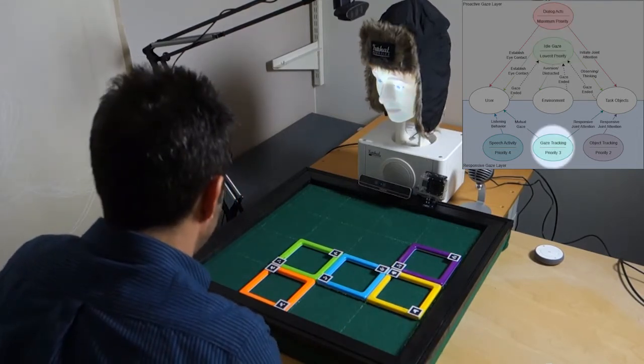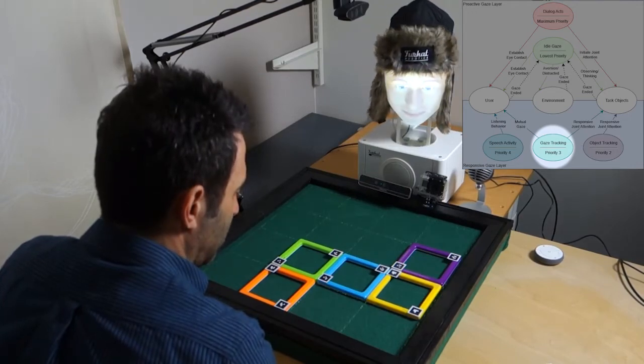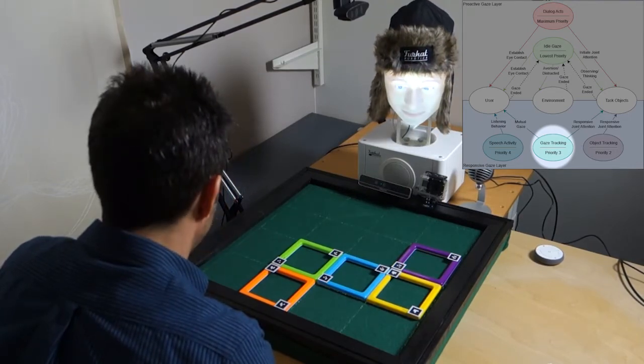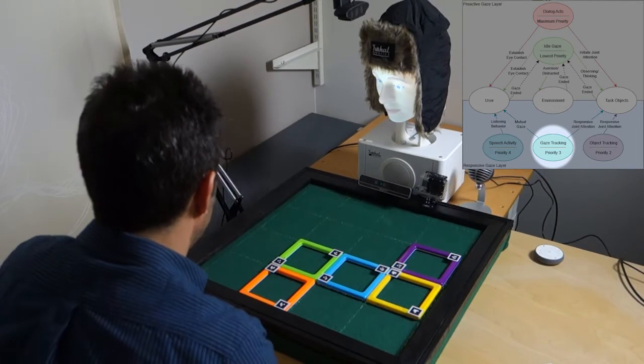The perception of these cues enables a reduction in the time that the robot is engaged in random idle behaviors and allows it to exhibit more meaningful and responsive gaze shifts.